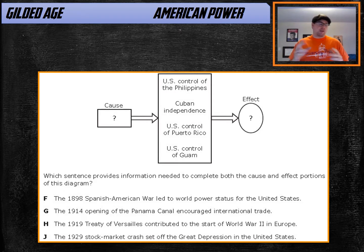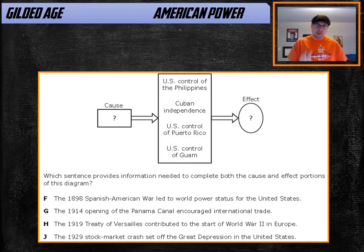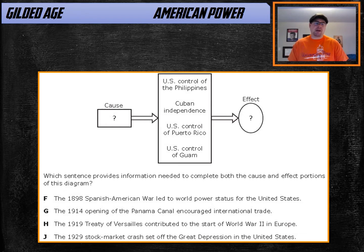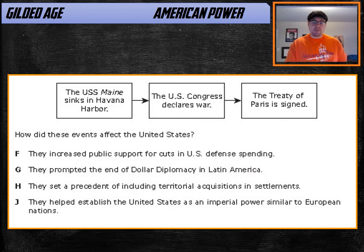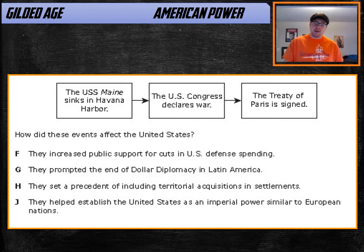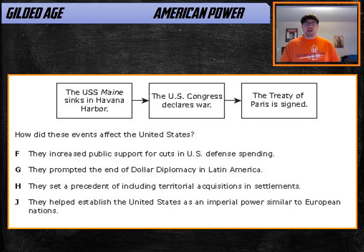They're going to throw a couple of different diagrams and charts at you, but that is almost always the answer — America becomes powerful. Let's look at another one: a different diagram, same answer. Look at J: 'They helped establish the United States as an imperial power similar to European nations.' America becomes powerful.